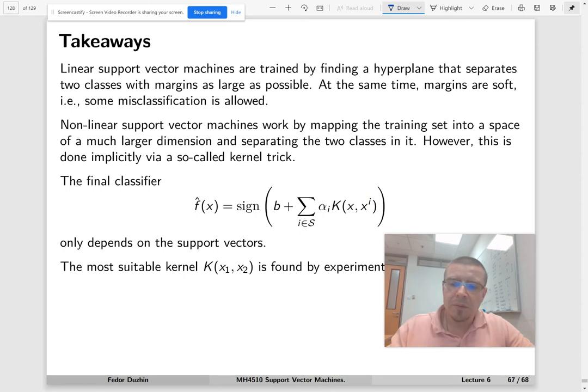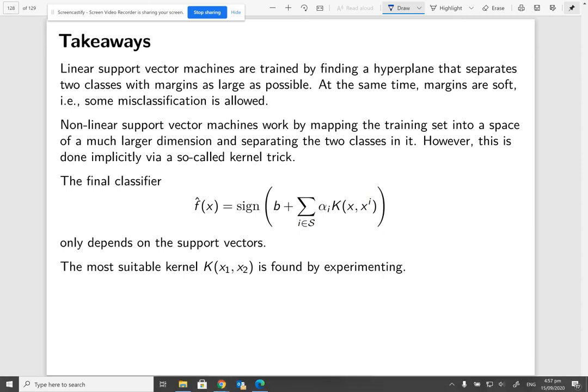Okay, now the most suitable kernel is found basically by just trial and error. We just experiment and see what works best. We have seen a number of different kernels, so usually we try linear, quadratic, probably cubic, and Gaussian kernel or radial basis, it's the same thing. If it doesn't work, then we can try other kernels.